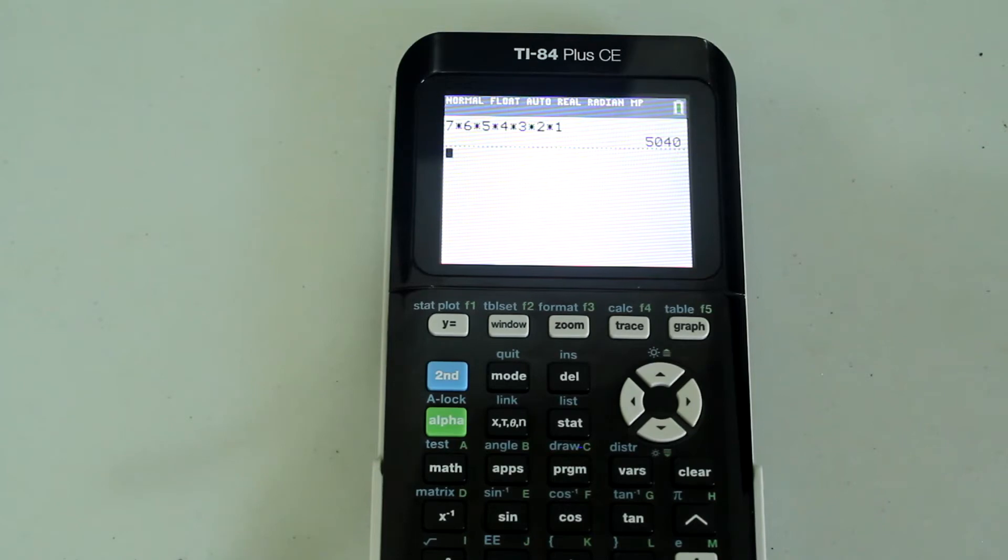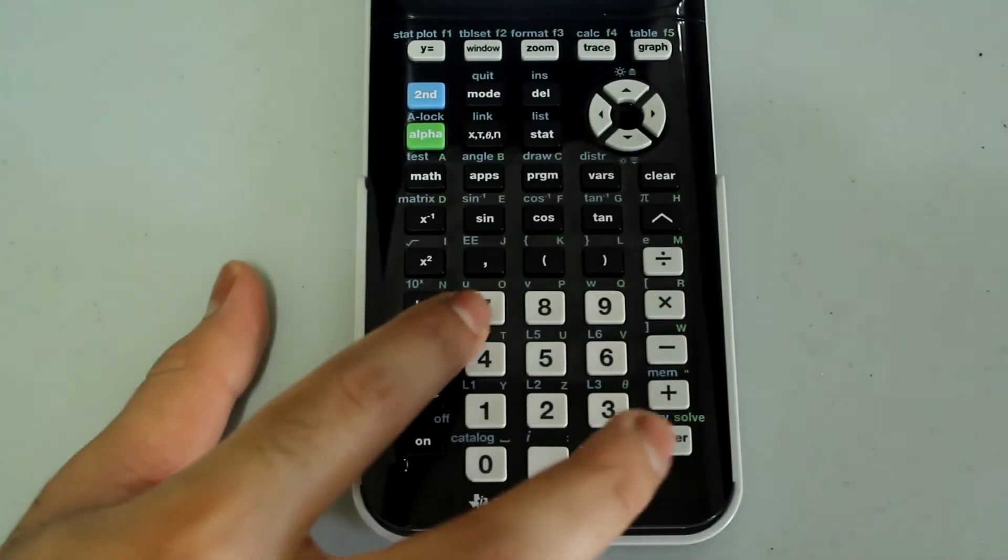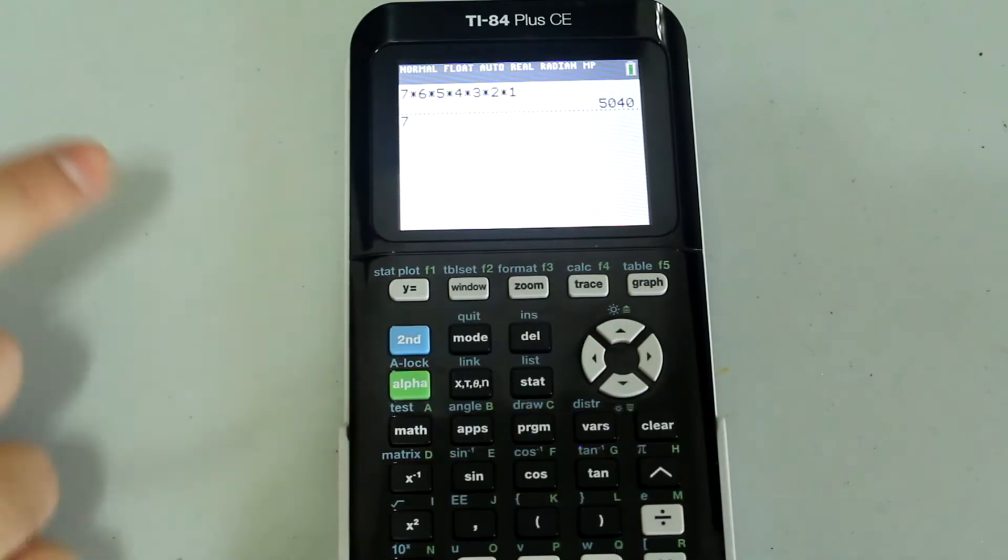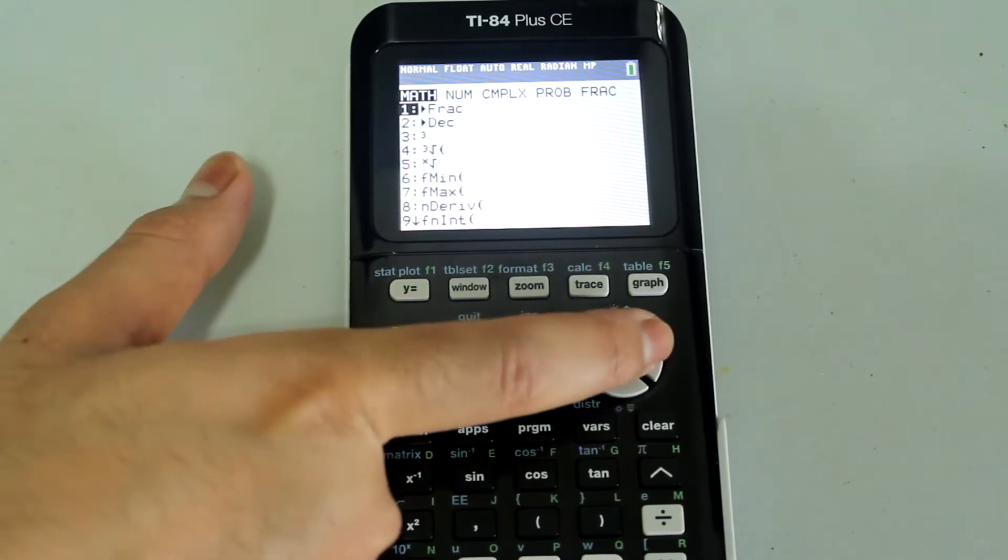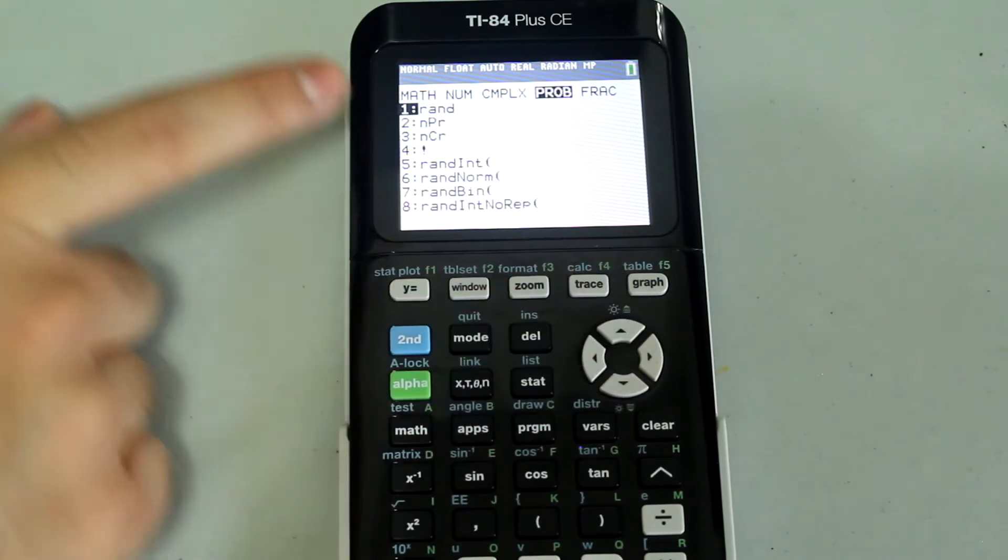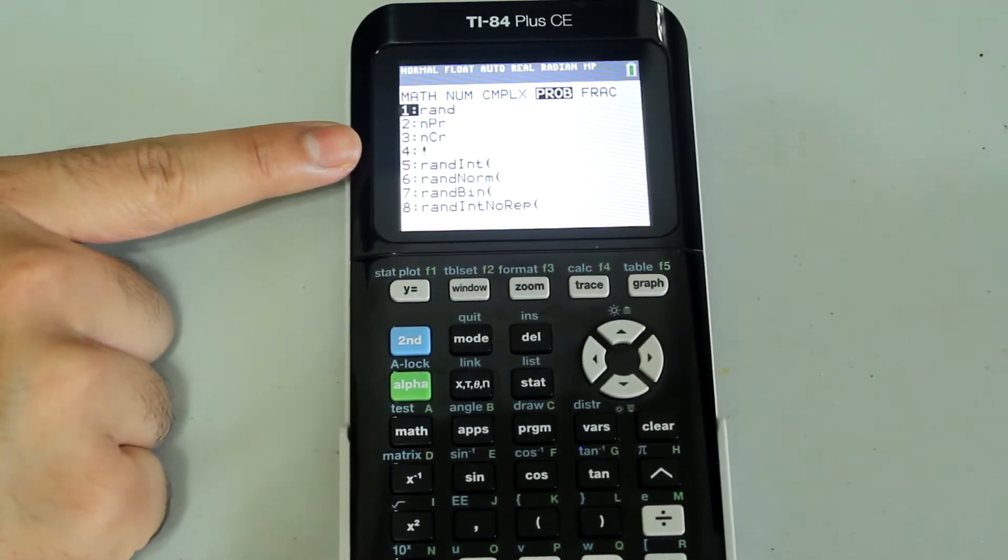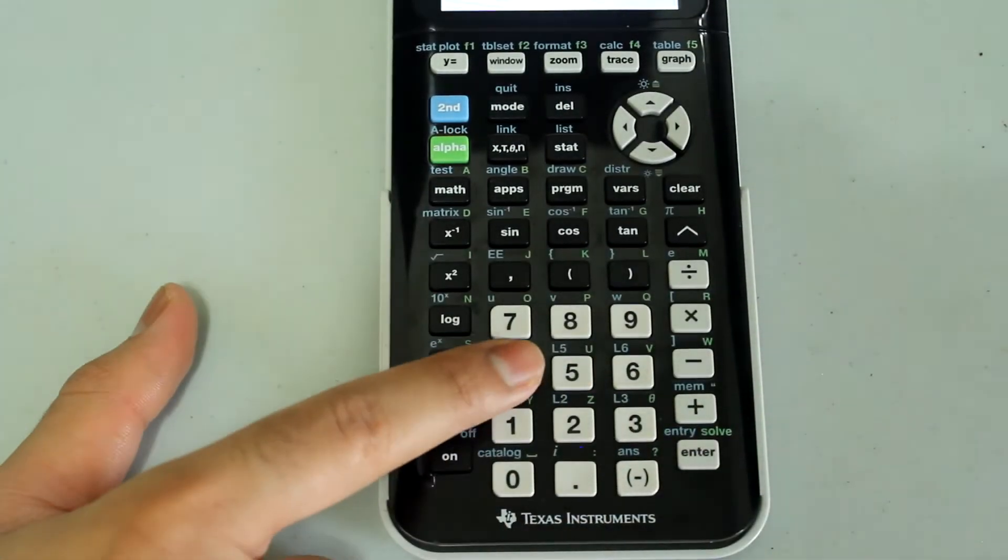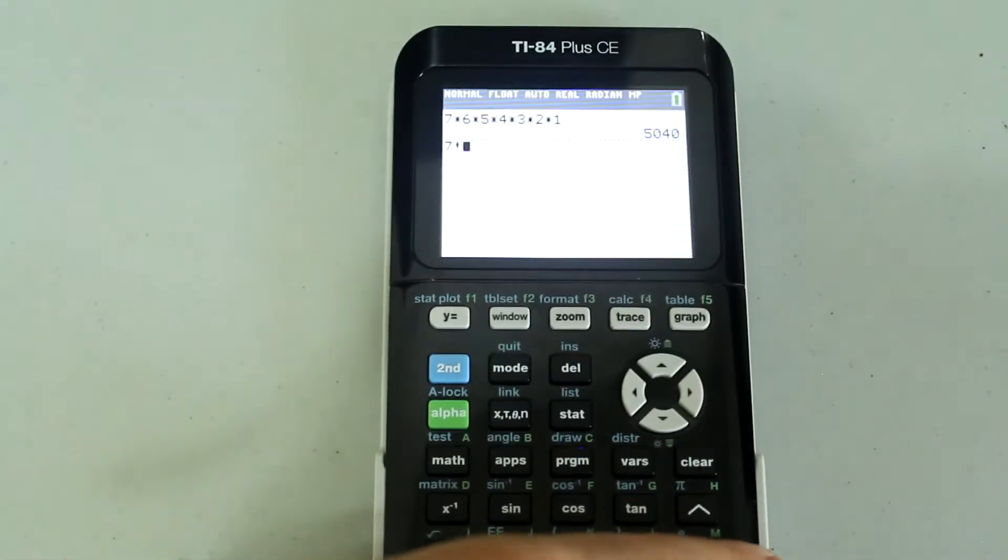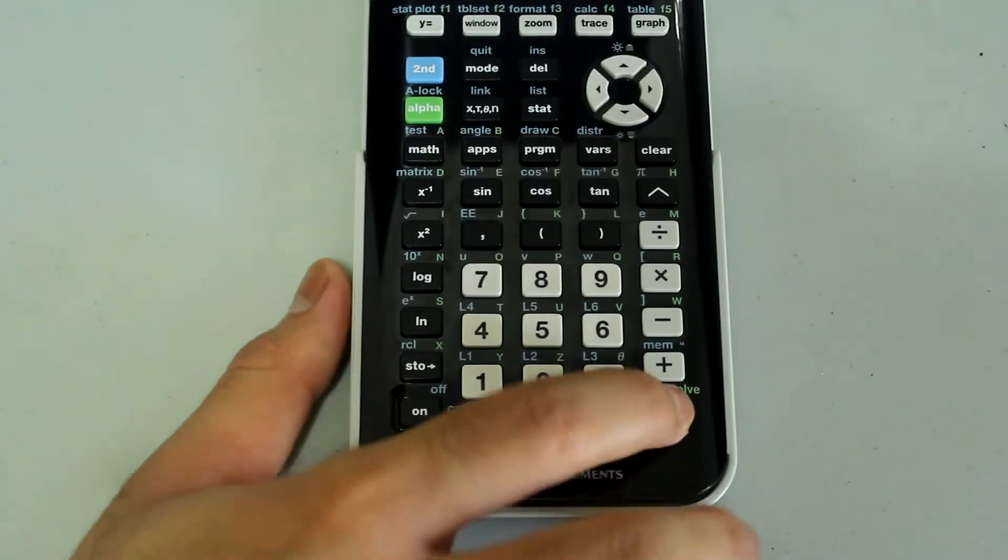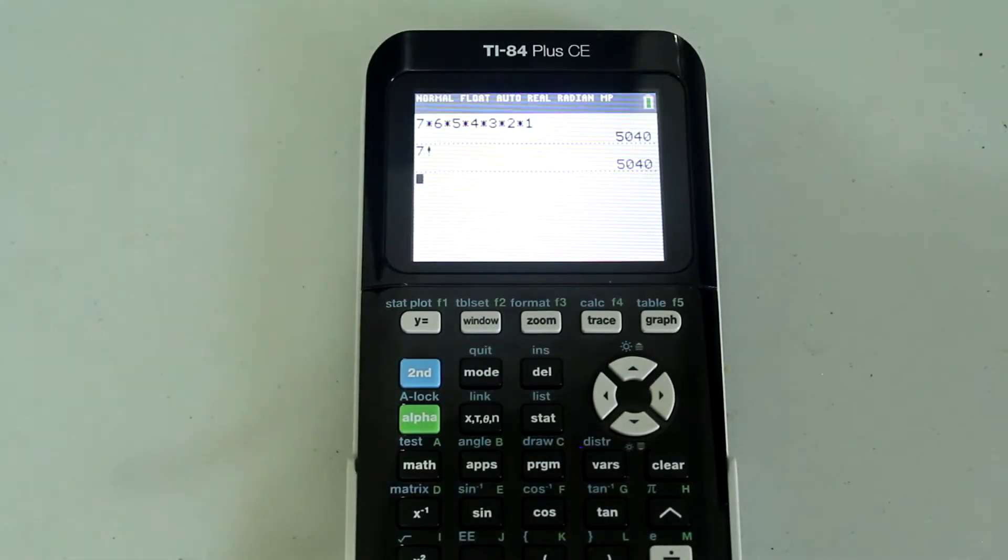We're going to use the factorial option to find 7 factorial. Type in 7 on the number pad. This is what I have on the screen so far. Then press the math button and arrow right until you arrive in the probability tab. You'll see that the fourth option is the factorial feature. Just press 4 on the number pad to select the factorial option. And now we have 7 factorial. Press enter, and now we have the result.